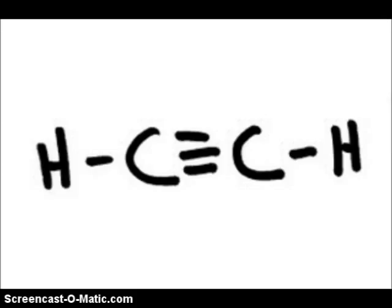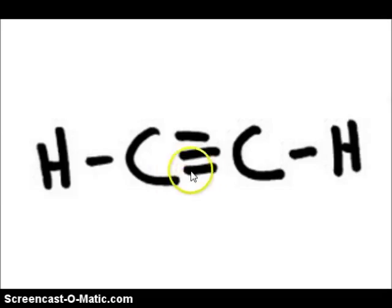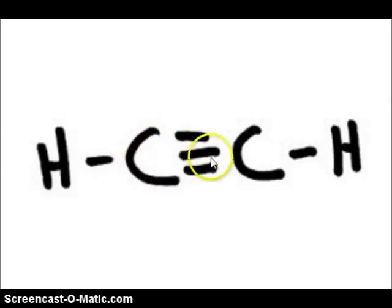Here's an example of a hydrocarbon that has a triple bond present between these two carbon atoms. We would call this hydrocarbon ethyne. Please note the Y-N-E ending tells us there is a triple bond. The eth prefix in the name tells us that there are two carbon atoms present in this molecule.